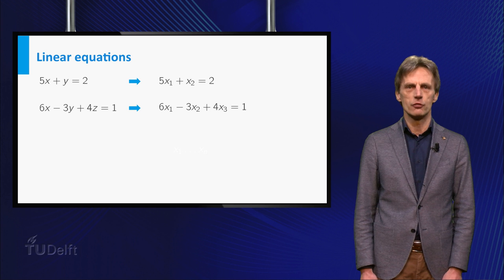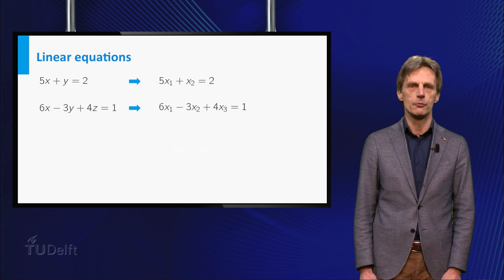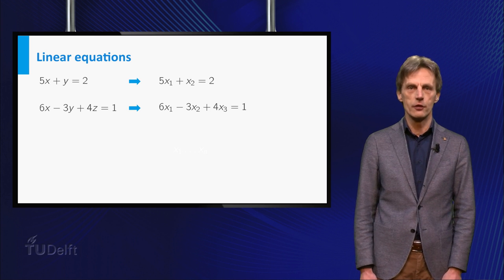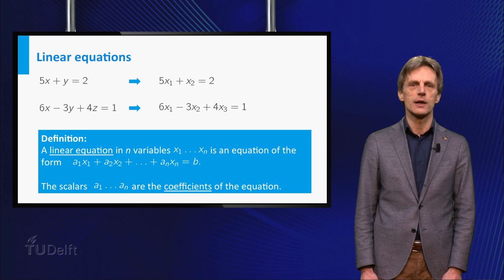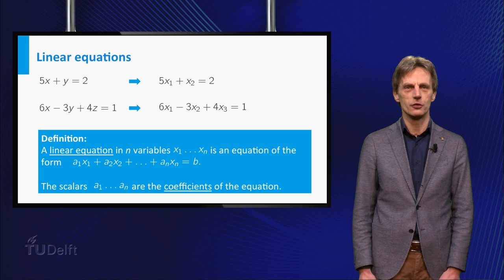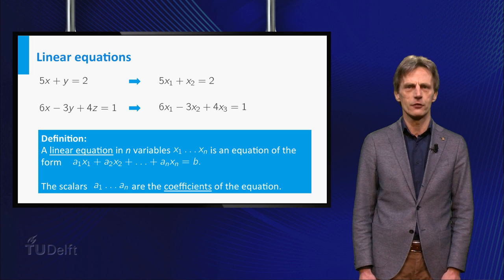A linear equation in n variables x1, x2 up to xn is an equation of this form. The scalars a1, a2 etc. are the coefficients of the equation and b is the right hand side of the equation.